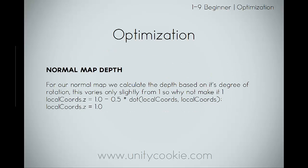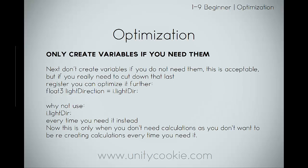For normal map depth, we calculate depth based on its degree of rotation, which varies only slightly from 1 - so why not just make it 1? What we ended up doing in our shader was attaching a slider. Only create variables if you need them. For simple values like a light direction, why not just use i.lightDir every time you need it? It's only when you don't want to recreate calculations repeatedly that you should cache them as variables. Assigning a dot product to a variable is good - you don't want to recalculate that every time you need it.